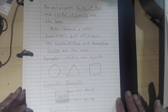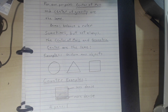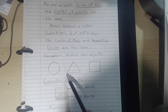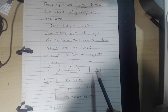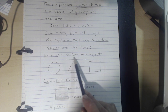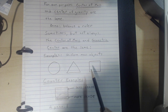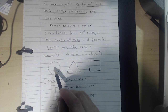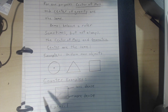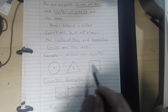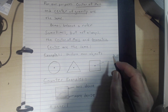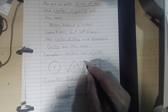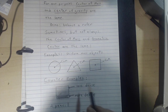Let me give a few examples and counter-examples using flat plane objects. Take a circle, an equilateral triangle, and a square with uniform mass distribution. I can find the center of mass easily — I just find the geometric center: center of the circle, center of the equilateral triangle, center of the square. These are cases where the geometric center and the center of mass are the same.